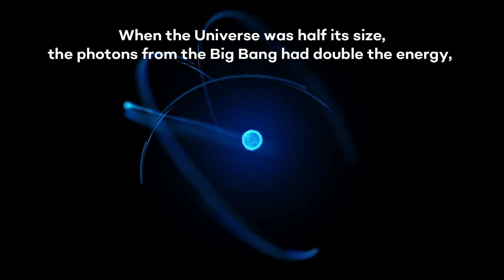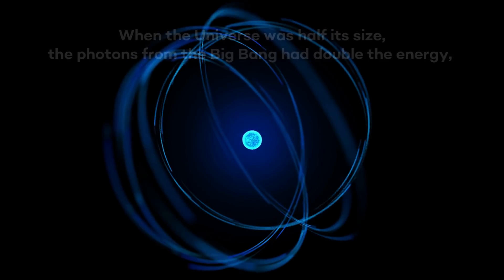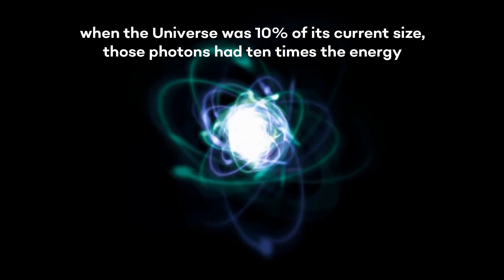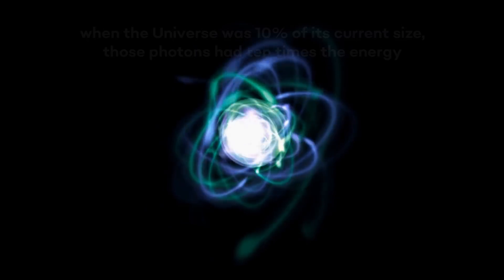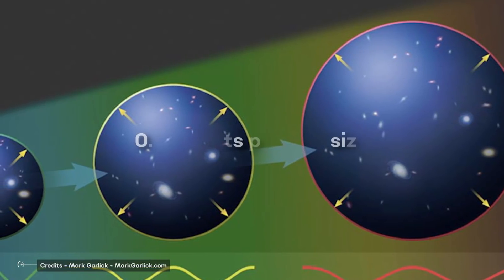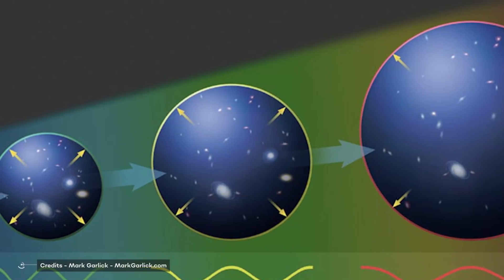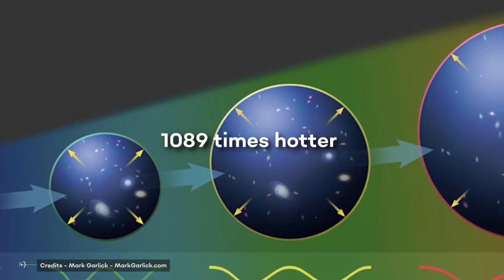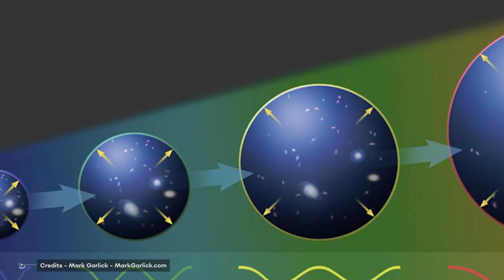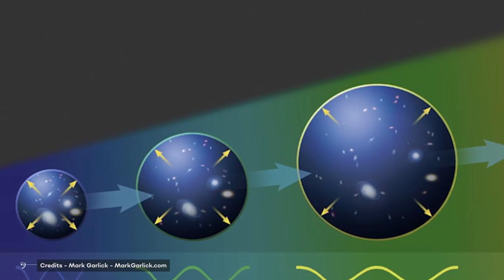A photon's energy is directly proportional to the inverse of its wavelength. When the universe was half its size, the photons from the Big Bang had doubled the energy, while when the universe was 10% of its current size, those photons had 10 times the energy. If we're willing to go back to when the universe was just 0.092% its present size, we will find a universe that's 1089 times hotter than it is today, around 3000 Kelvin.